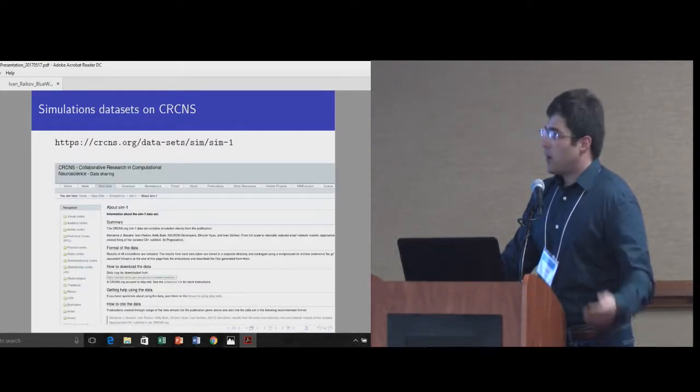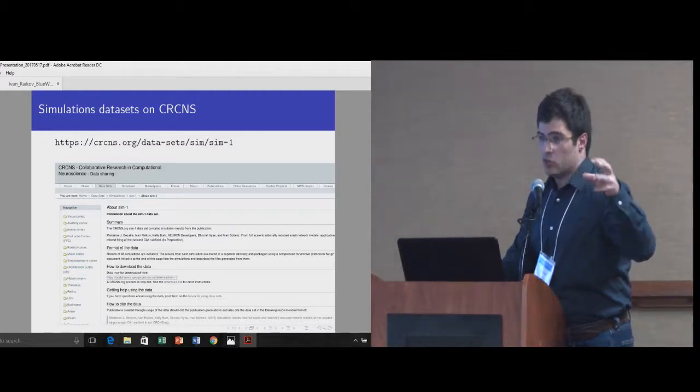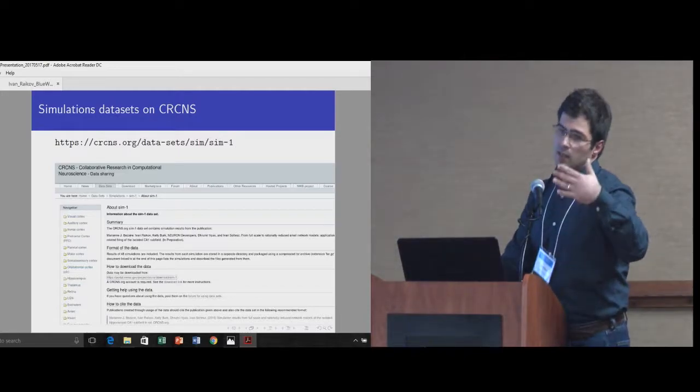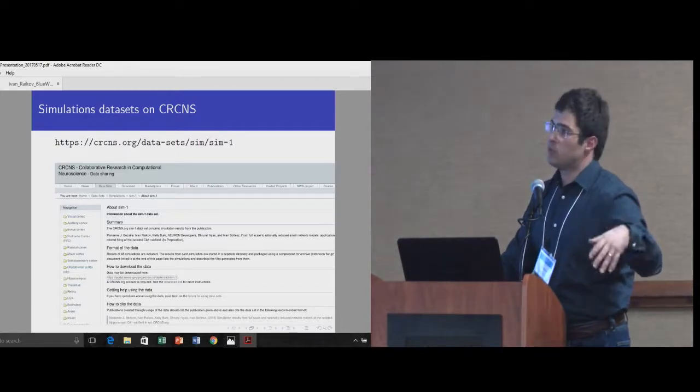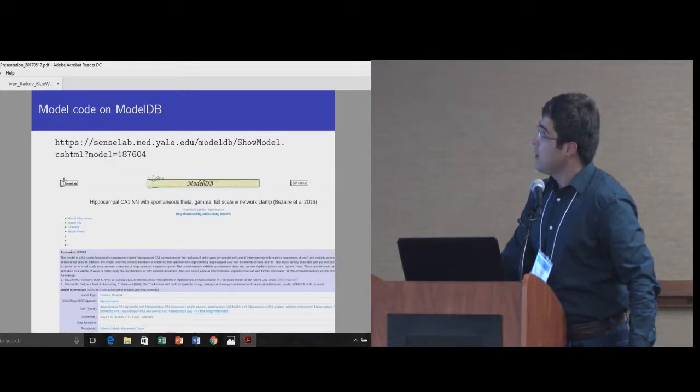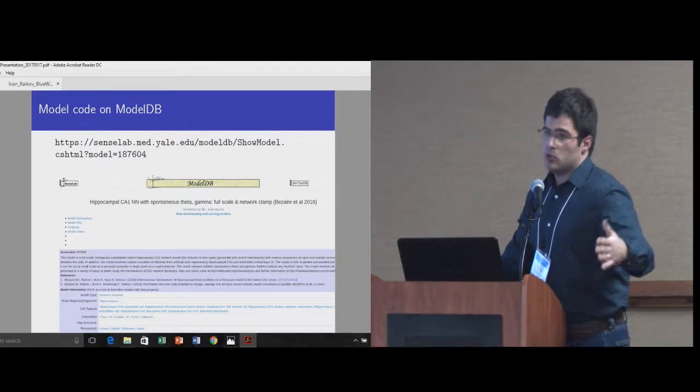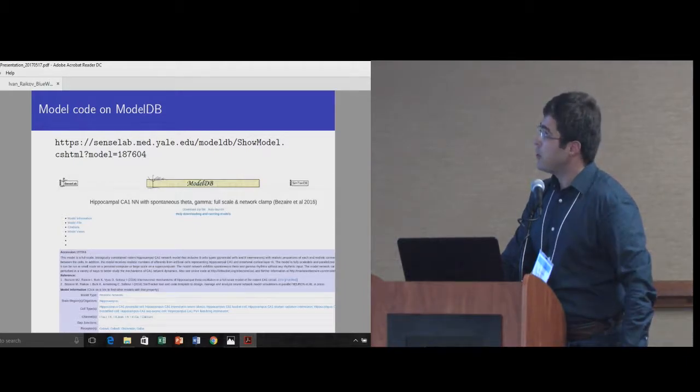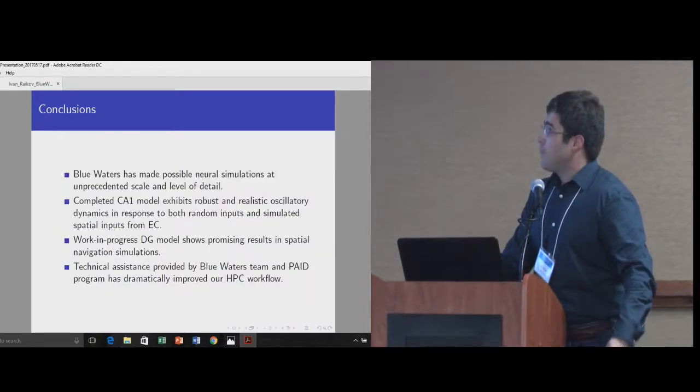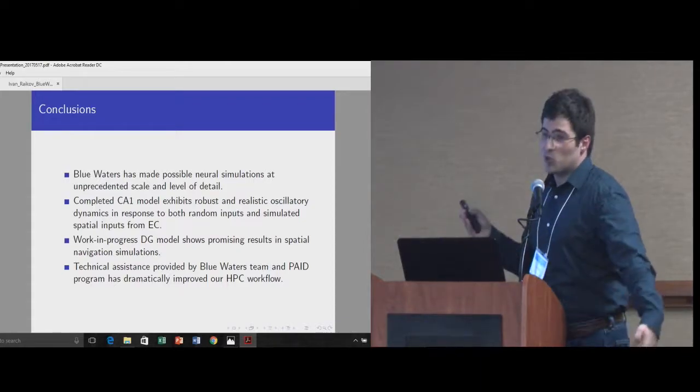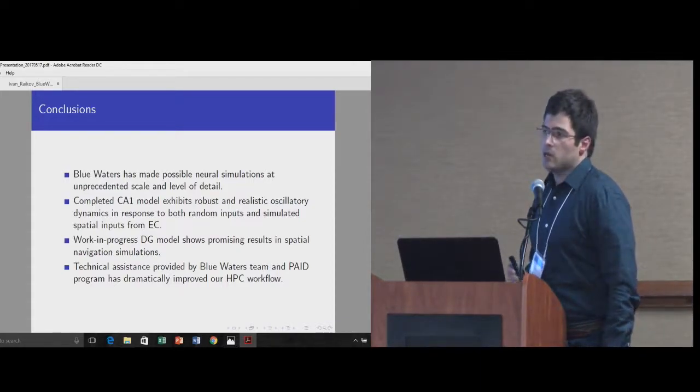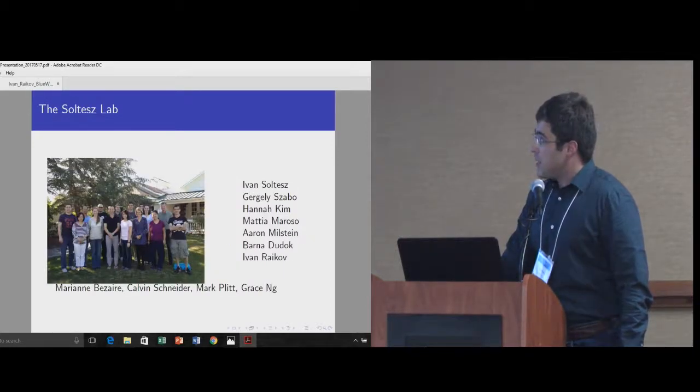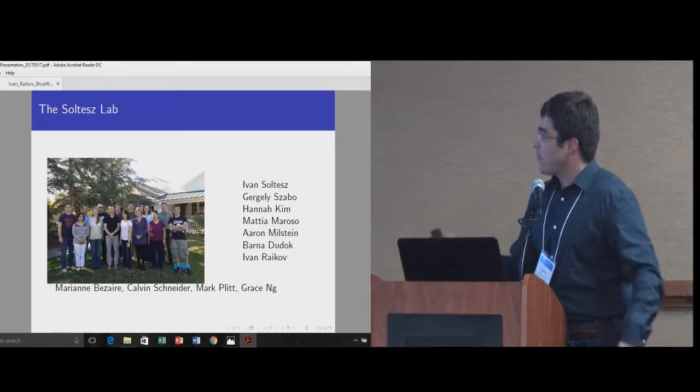And these are just some of our simulation data sets that can be released in public databases, because not everybody has access to Blue Waters. But our data can be analyzed by other groups and can be checked for validity. We've released our model code on ModelDB, which is the major code sharing website used by neuroscientists. And finally, the conclusion is Blue Waters has made possible neural simulations at unprecedented scale that nobody else has done so far. And this is our lab, all the people who have helped in some way.